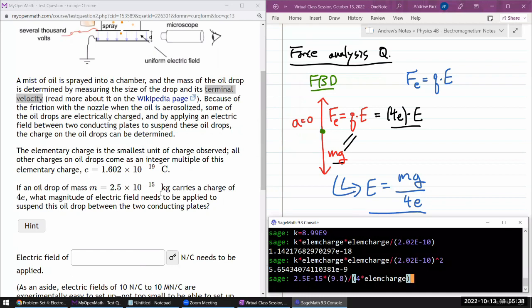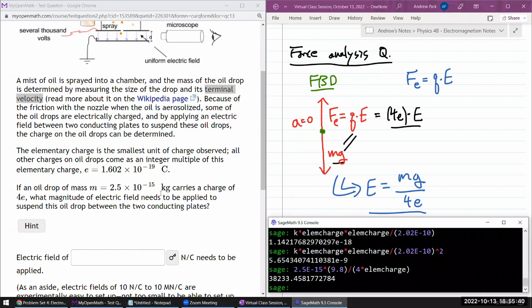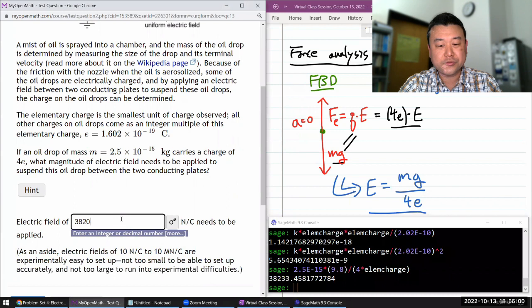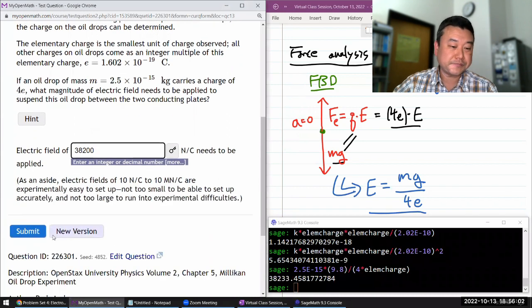Divided by 4 times the elementary charge that I programmed in earlier. And I just kept everything in basic SI units and I will trust that newtons per coulomb will work out. So the answer here should be 38.100 newton per coulomb.